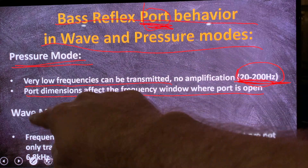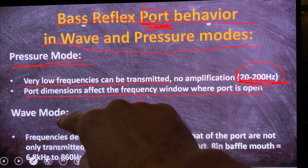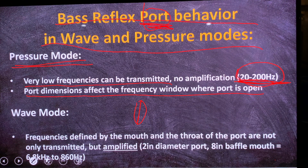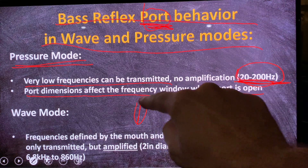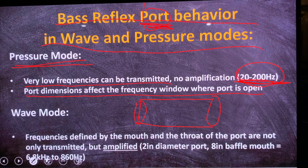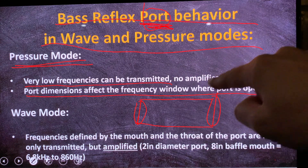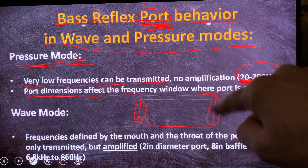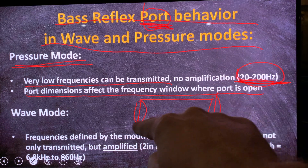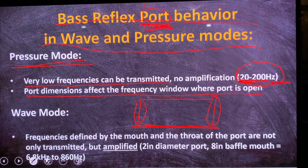Even though we are talking about wave mode, the diameter of the throat gives you the highest frequency amplified by the port. Then it has a certain length, and then the other end is called the mouth. The diameter of the mouth determines the lowest frequency it will amplify — provided the mouth is the larger end.